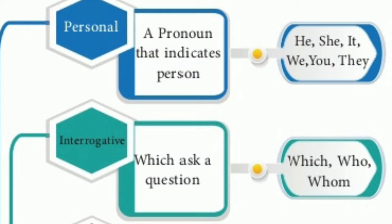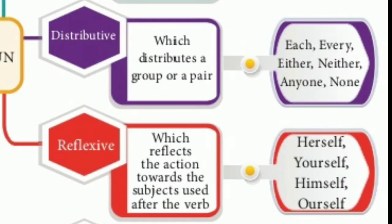Interrogative pronoun: it asks a question. For example — which, who, whom. Distributive pronoun: which distributes among a group or a pair. For example — each, every, either, neither, anyone, none.